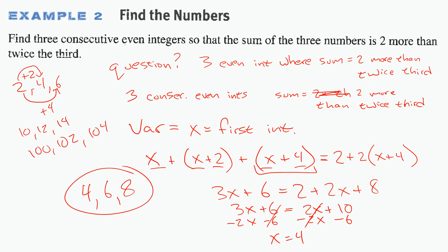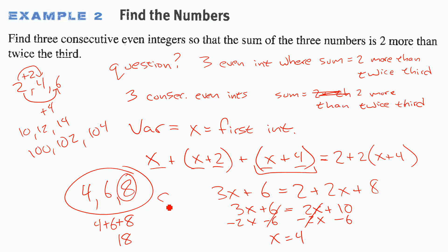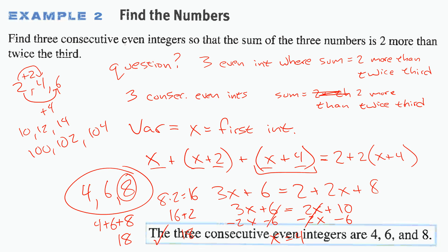Our three consecutive even integers are 4, 6, and 8. Check: 4 + 6 + 8 = 18. Two more than twice the third: 2 × 8 = 16, plus 2 = 18. It checks out — the answer is 4, 6, and 8.